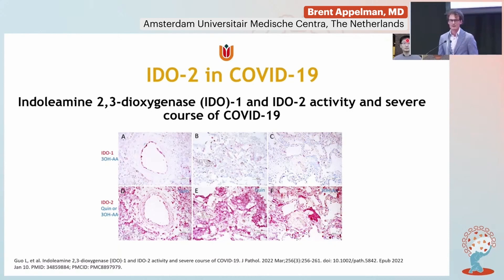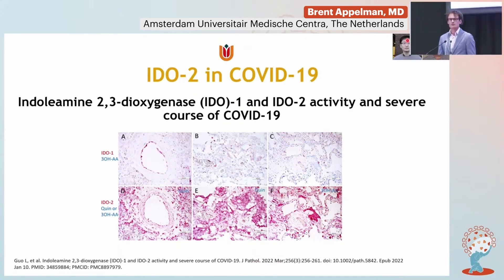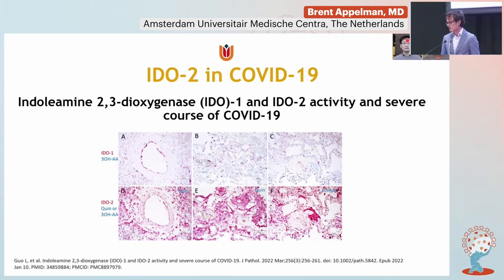We took pulmonary tissue from deceased COVID-19 patients and stained for IDO1 and IDO2. Normally you would expect IDO1 — you have SARS-CoV-2, interferon gamma pushing up IDO1 — but instead we saw a lot of IDO2 in the pulmonary tissue, which shouldn't be there. We also saw a lot of autophagy and apoptosis. This got us thinking: could this also be present in Long COVID?